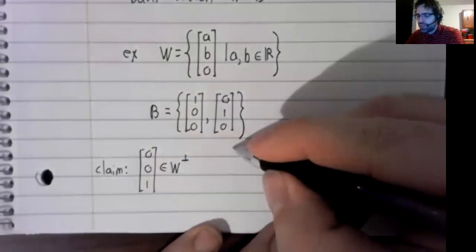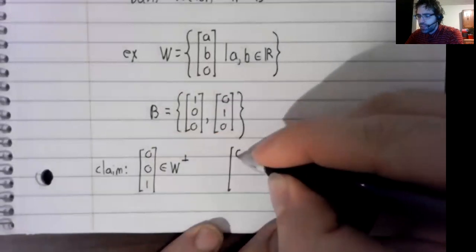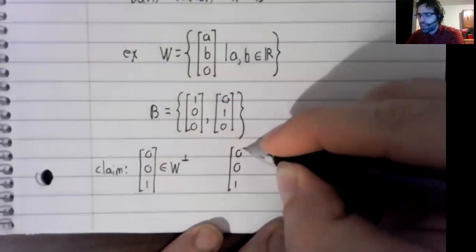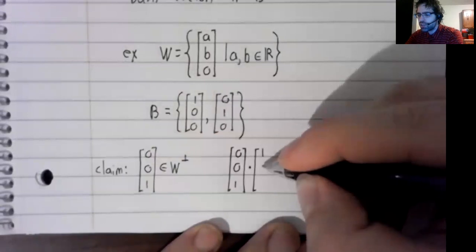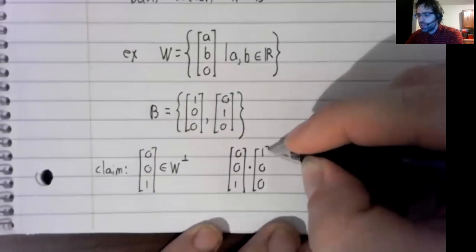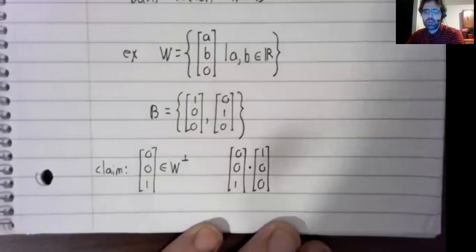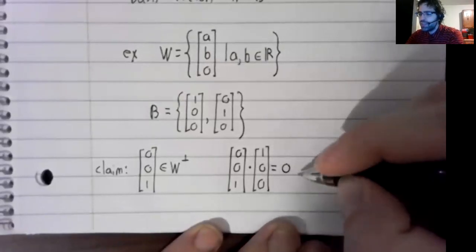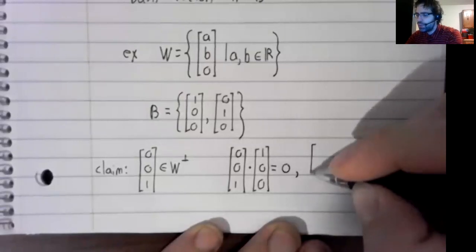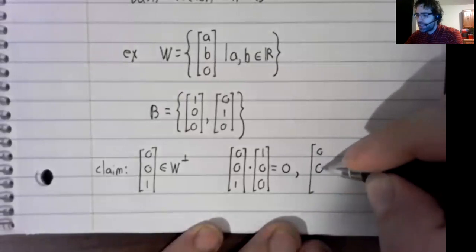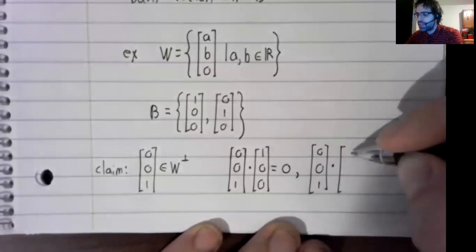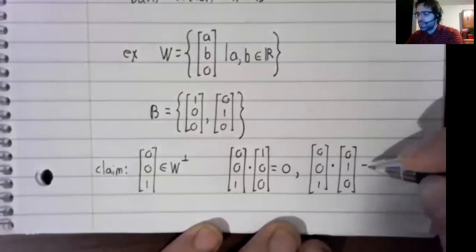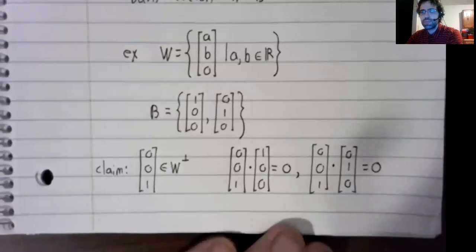To verify this claim, you only have to check two dot products. The dot product with the first basis vector is indeed zero. And the dot product with the second basis vector is also zero.